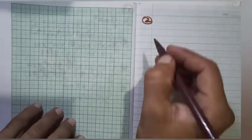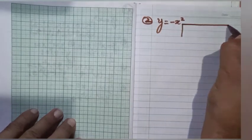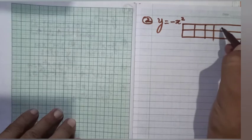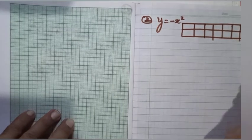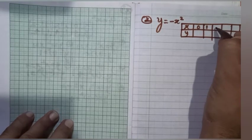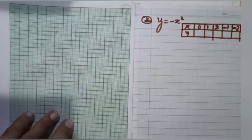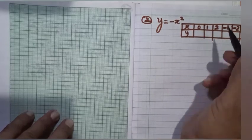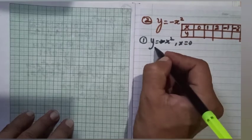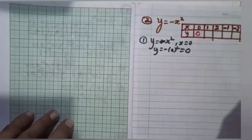Now let's plot the next graph: y is equal to minus x squared. As before, we take both positive and negative values of x. We set up a table with x and y, taking values 0, 1, 2, minus 1, and minus 2. For x equal to 0, y equals minus 0 squared, which is 0.